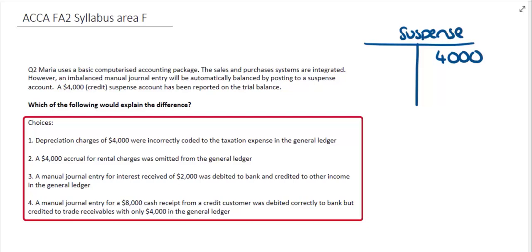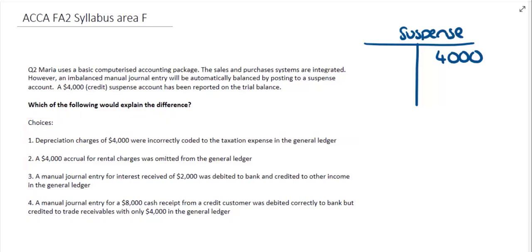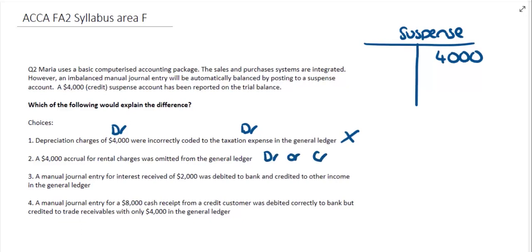The first choice tells us that depreciation charges of $4,000 were incorrectly coded to the taxation expense in the general ledger — this is just going from one expense to another, with no imbalance between debits and credits, so it will not correct the suspense account. The second option tells us a $4,000 accrual for rental charges was omitted from the general ledger — it was missed out completely with no debit or credit, so it doesn't create an imbalance and can't explain the $4,000 suspense account.